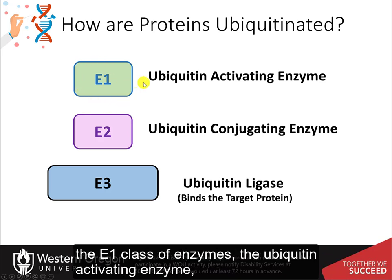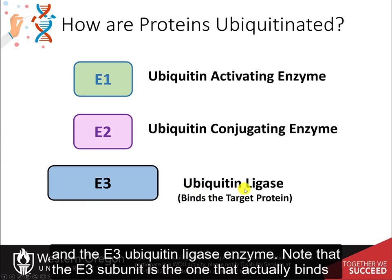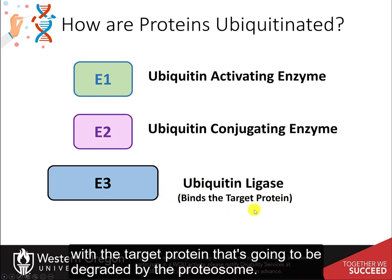The E1 class of enzymes, the ubiquitin activating enzyme. The E2 protein, the ubiquitin conjugating enzyme. And the E3 ubiquitin ligase enzyme. Note that the E3 subunit is the one that actually binds with the target protein that's going to be degraded by the proteasome.